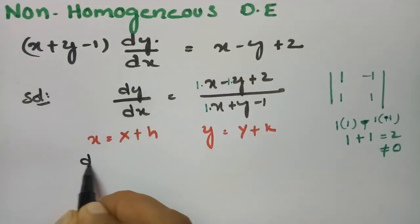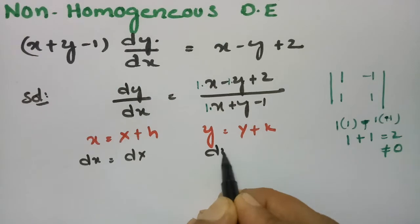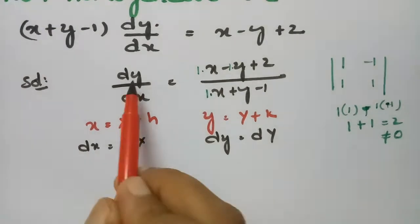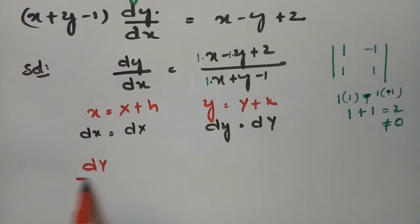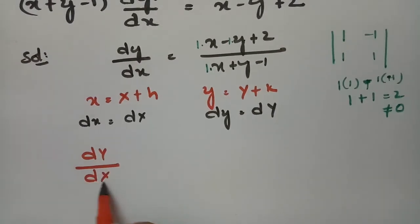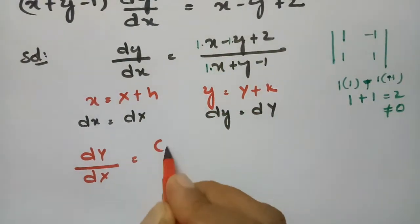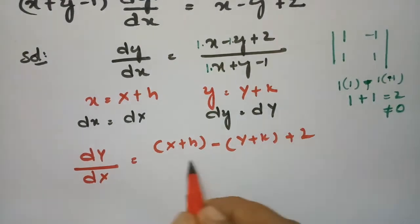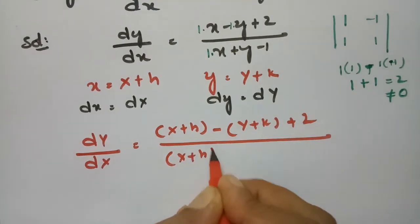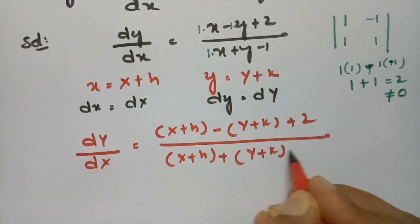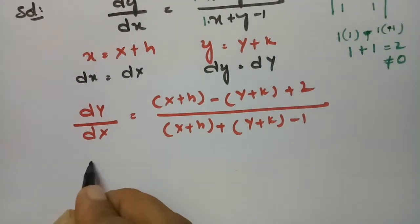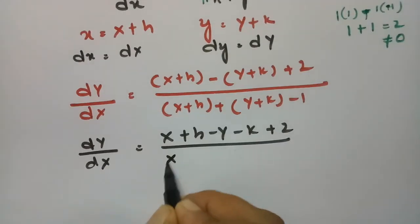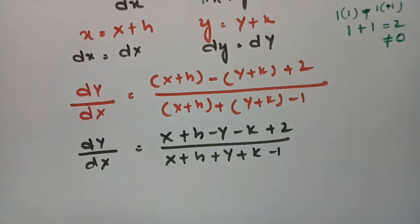The derivative of this substitution gives: dx = dX (since h is constant) and dy = dY. Transforming the equation: dY/dX = (X + h - (Y + k) + 2) / (X + h + (Y + k) - 1), which simplifies to dY/dX = (X - Y + h - k + 2) / (X + Y + h + k - 1).